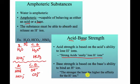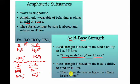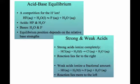A Bronsted-Lowry base will take a hydrogen ion. The stronger the base, the higher the affinity — affinity means strength and ability to pull. Here we have proton affinity. So the stronger the base, the higher the affinity for that hydrogen ion. This is going to let us talk about our equilibrium here, because we're looking at water trying to pull this hydrogen ion.